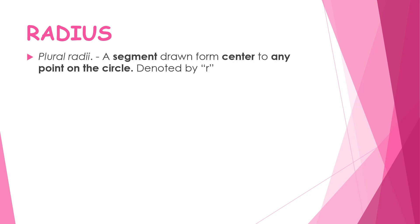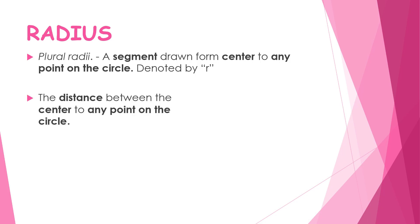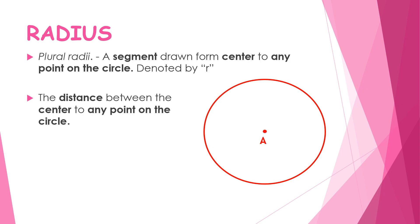The first related term is radius. Its plural form is radii. A radius is a segment drawn from the center to any point on the circle, denoted by the letter r. So the radius is the distance between the center and any point on the circle.